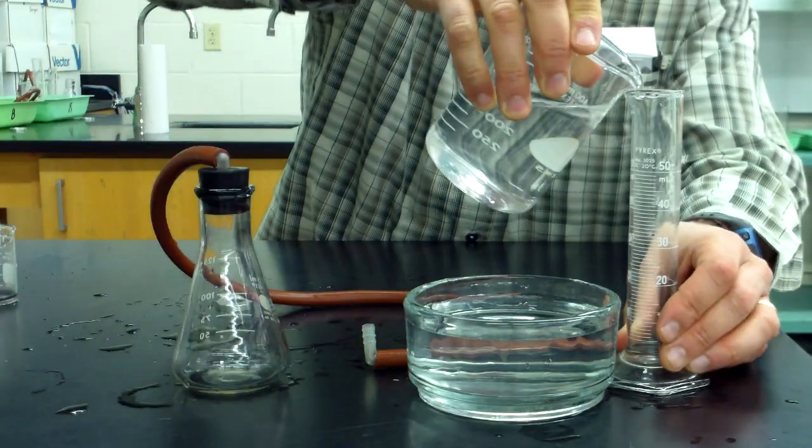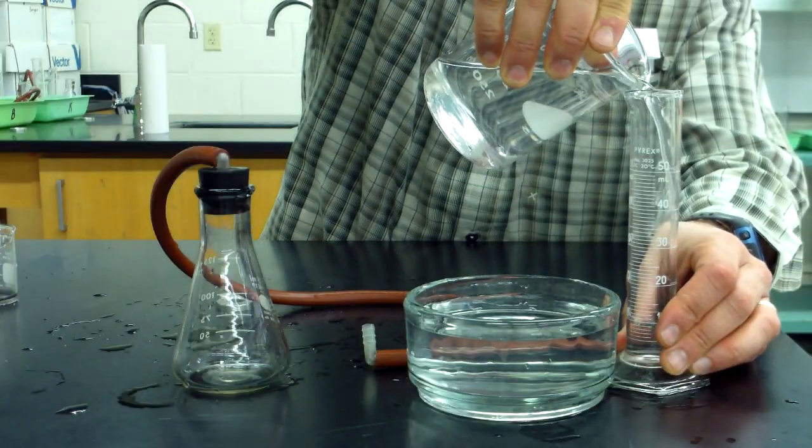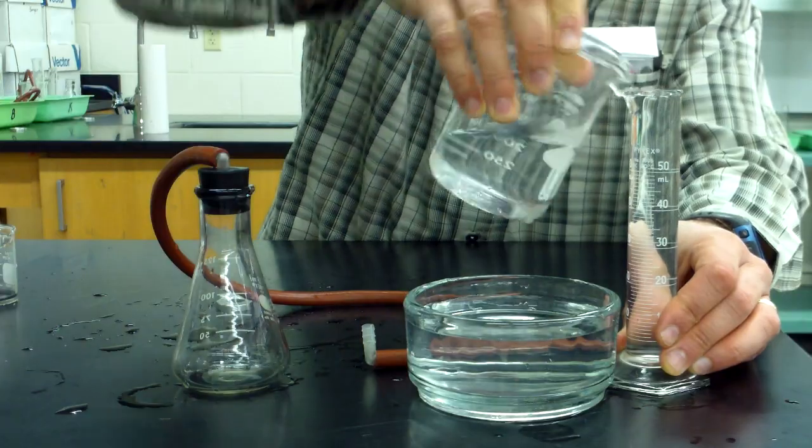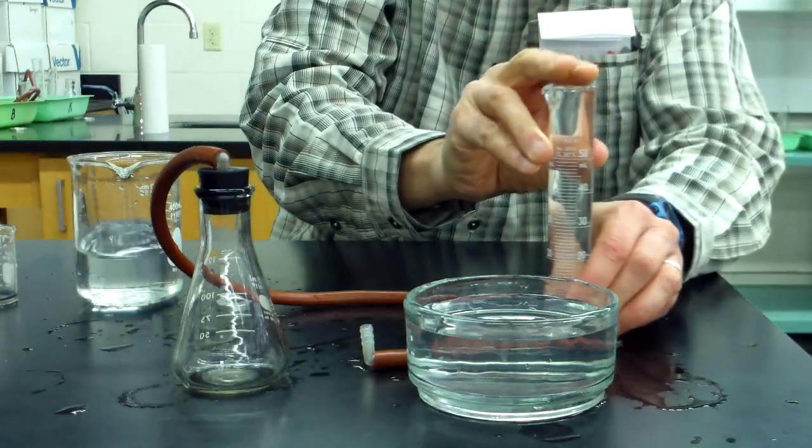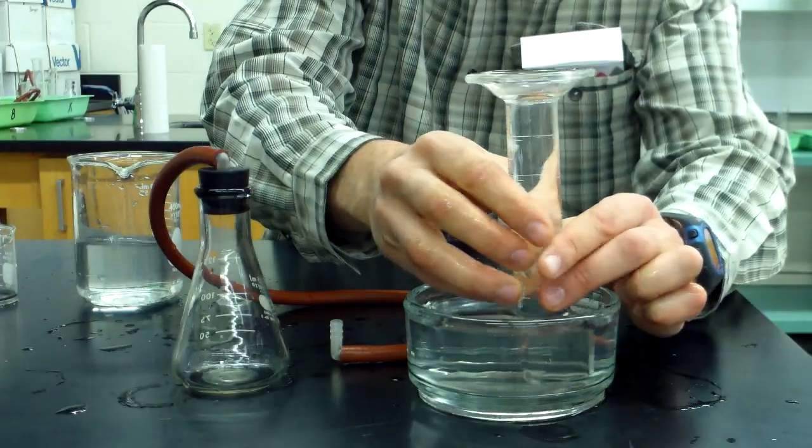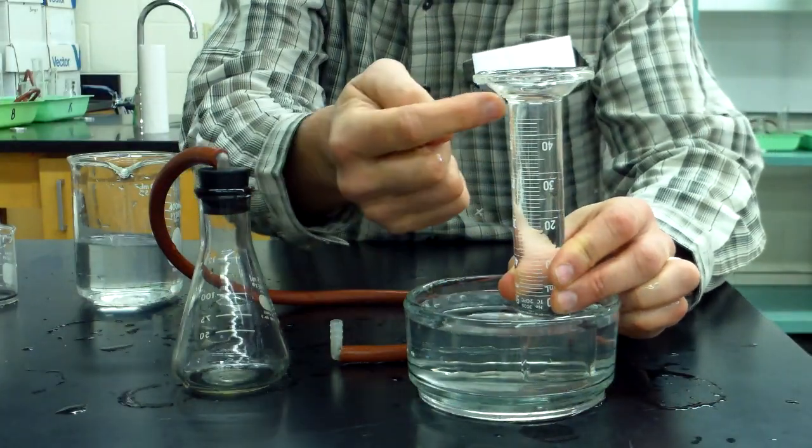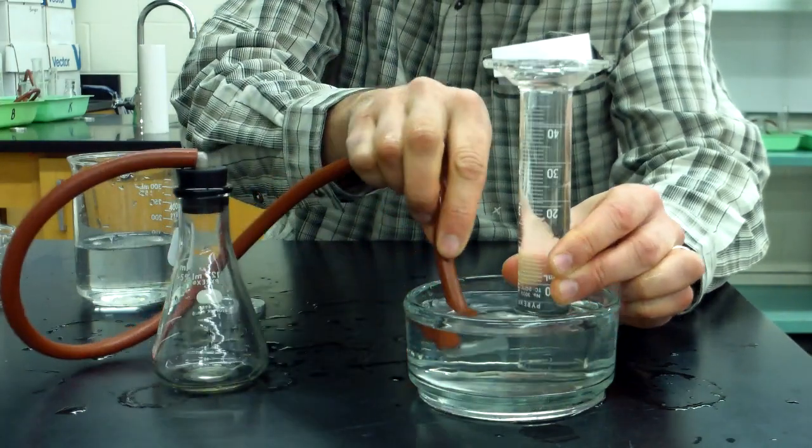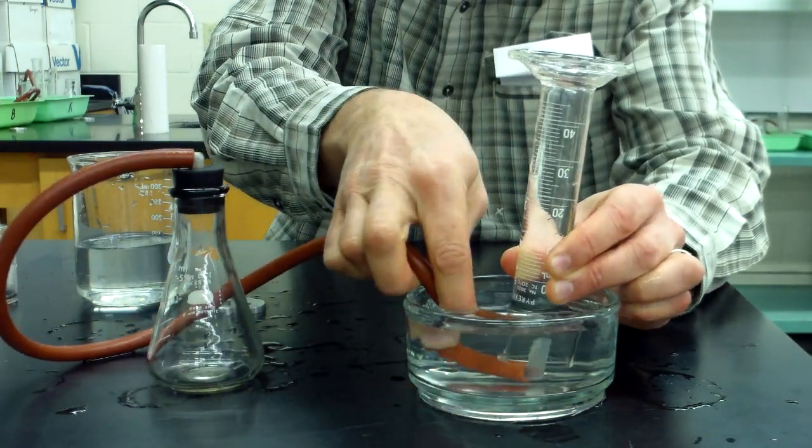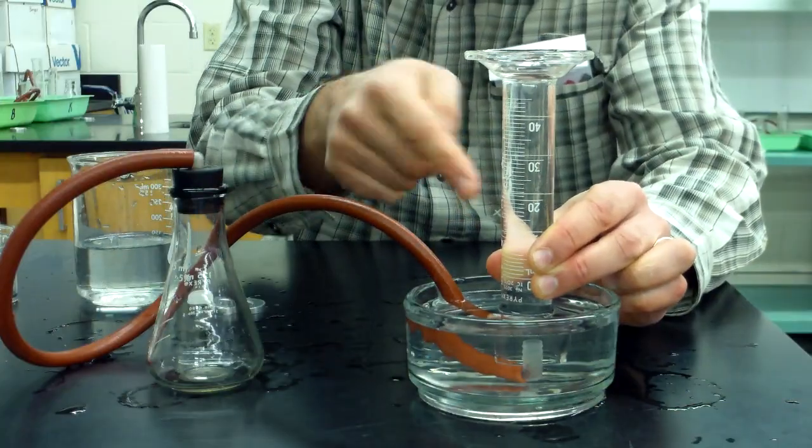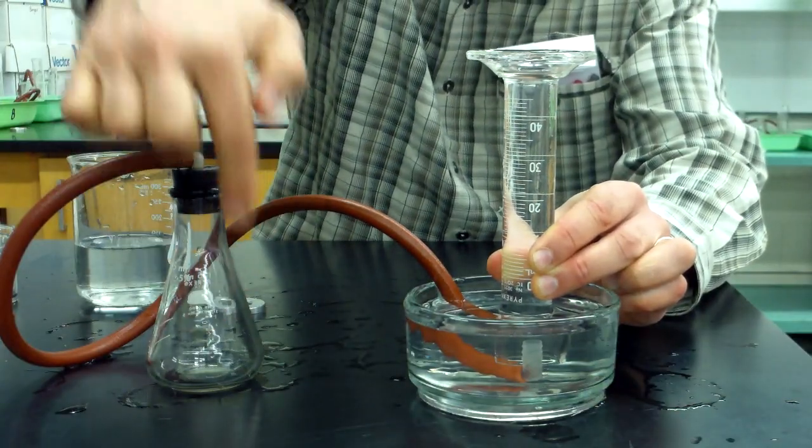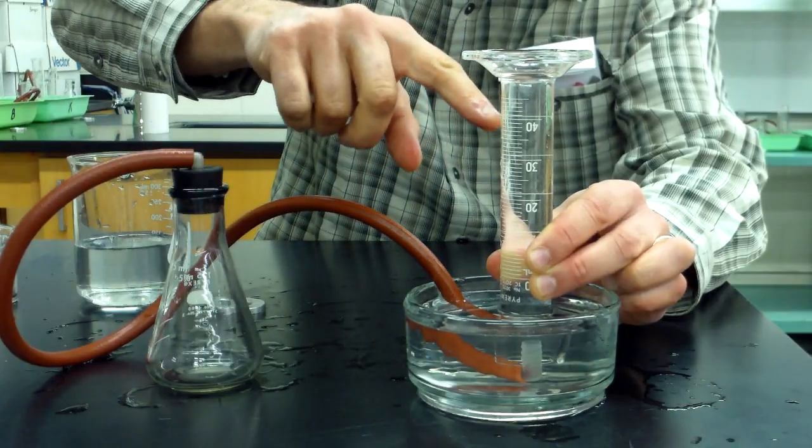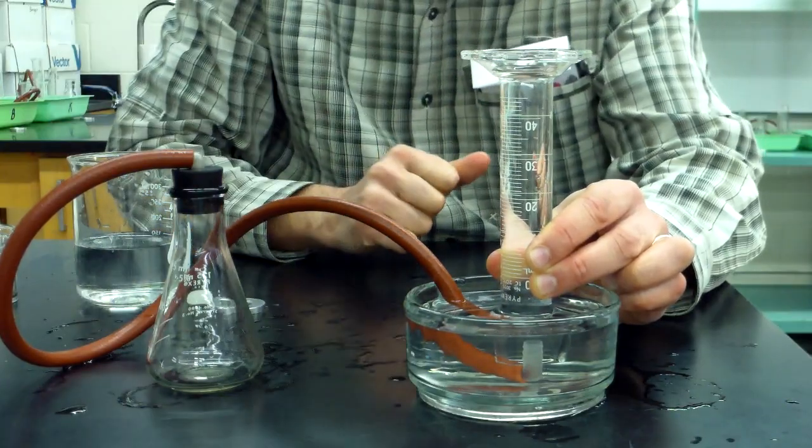To do that, we're going to take a 50-milliliter graduated cylinder and fill it right up to the tippy-tippy top, and then we're going to overturn this in the water, which takes some practice, but you'll be able to get used to it. Now we have a column of water here, so we're going to put the end of this hose underneath the graduated cylinder carefully and hold it up. Now any oxygen gas that's produced in the reaction chamber will travel through the hose and end up displacing this column of water as the gas accumulates.